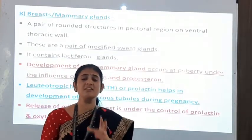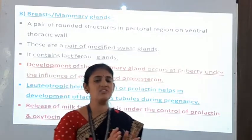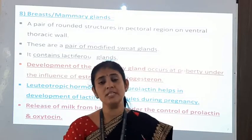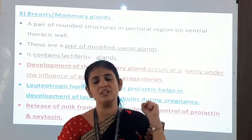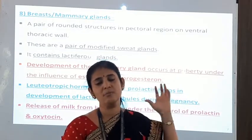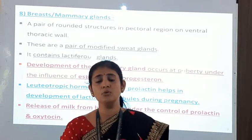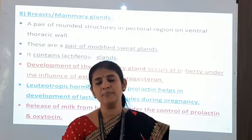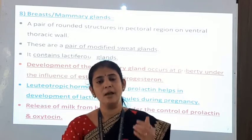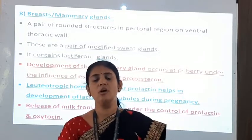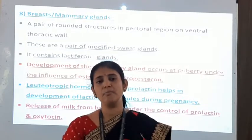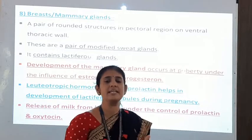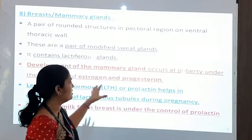The last part of the external genitalia is the breasts or mammary glands. This is a very important structure in the female reproductive system because due to the development of mammary glands, the newly born baby is nourished by the milk secreted by these glands. We now study the different parts of the mammary gland, its structures, and how milk is secreted.